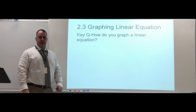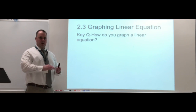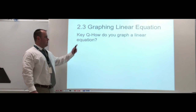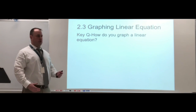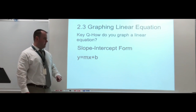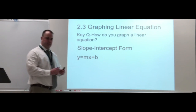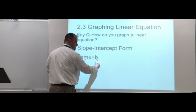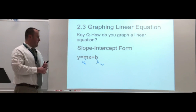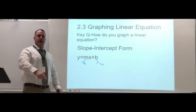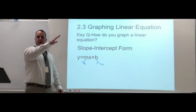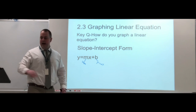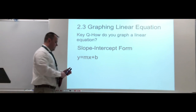Moving on to 2.3 of Honors Algebra 2, we're graphing linear equations. You should have the background on slope and know what a function is. We're going to be graphing linear functions, focusing on slope-intercept form: y = mx + b. The m is our slope and the b is our y-intercept. Slope tells us the steepness of our line — rise over run, how far up and how far over. The y-intercept is our starting point, where our line crosses the y-axis.